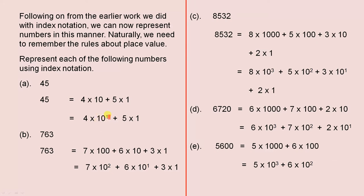The next one is 763. That's the ones column, the tens column, and the hundreds column. So 763 equals 7 times 100 plus 6 times 10 plus 3 times 1, which is 7 times 10 squared plus 6 times 10 to the power of 1 plus 3 times 1. And there's the index notation.